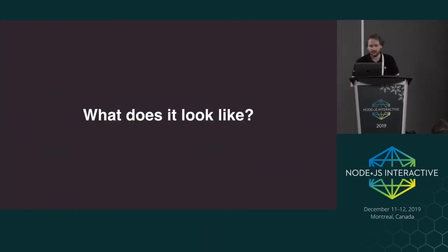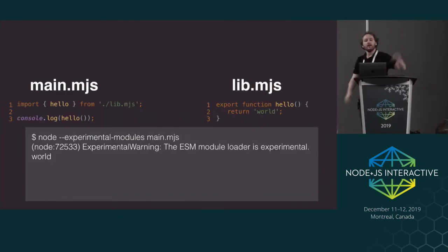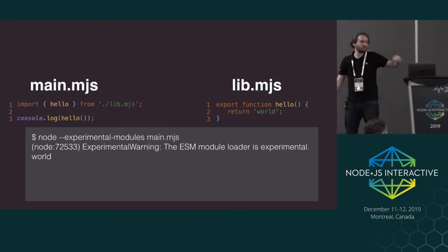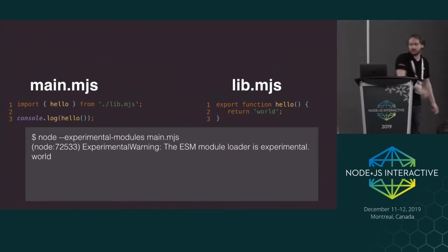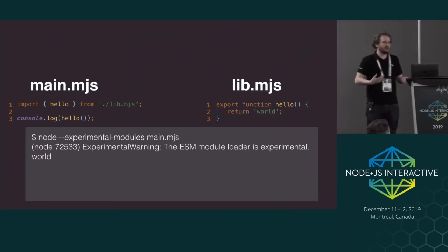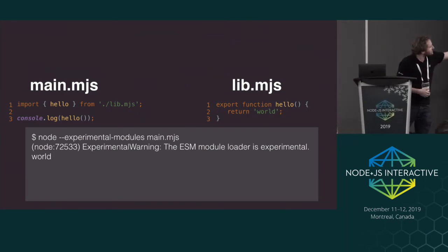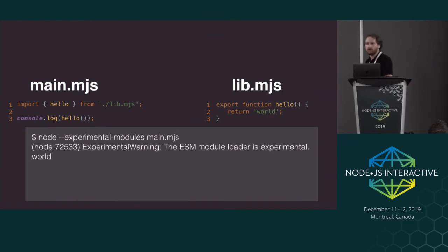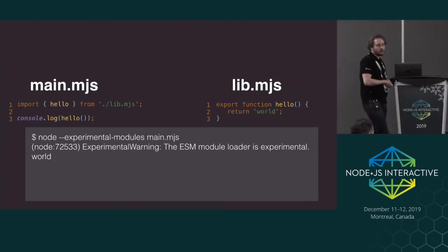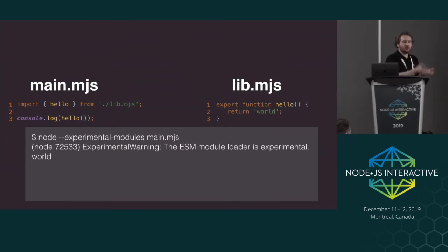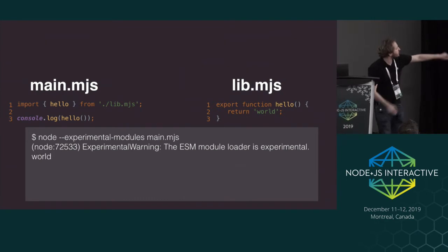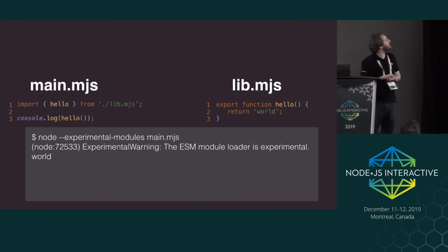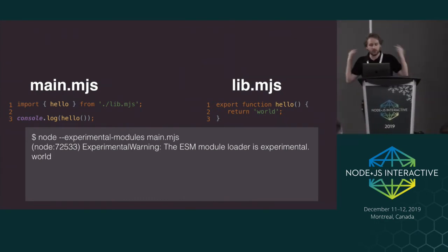What does it look like? Let's say we have two modules: one named main.mjs that imports another module lib.mjs. lib.mjs just exposes a function named hello that returns 'world'. If you start Node with --experimental-modules, or even without a flag on the latest version, the code will run and ES6 modules will be resolved. You will have a warning in the console, but you will display 'world' as expected.